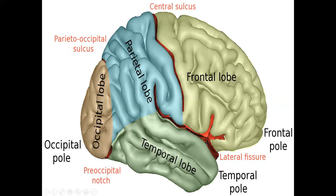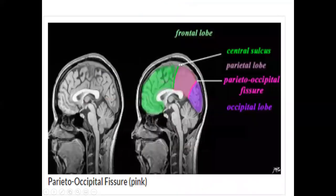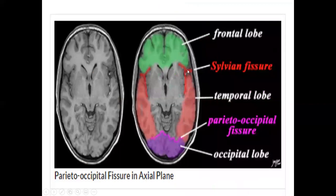Another important sulcus is the lateral fissure or sylvian sulcus, which separates the frontal and parietal lobe from the temporal lobe. The parietal-occipital sulcus differentiates the parietal lobe from the occipital lobe. So: the central sulcus divides frontal and parietal, the parietal-occipital fissure separates parietal from occipital, and the sylvian fissure separates frontal from temporal.